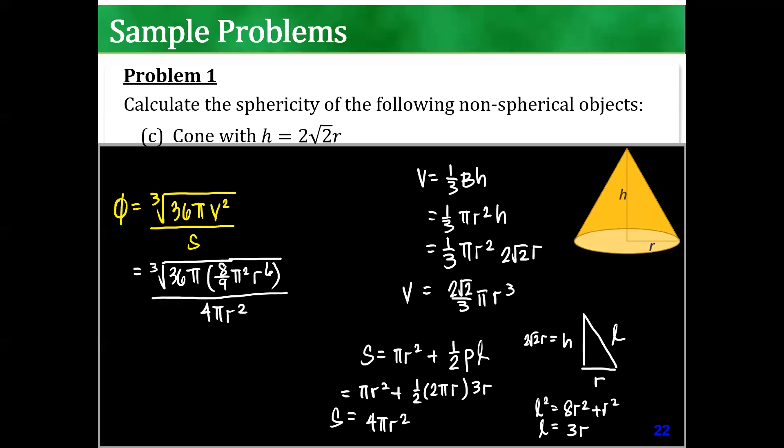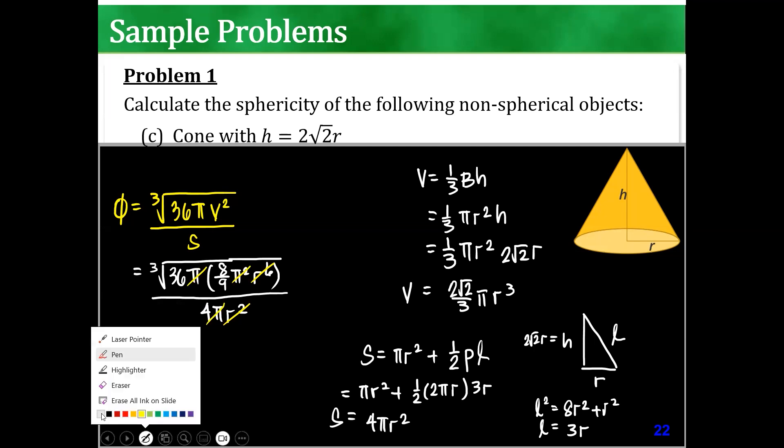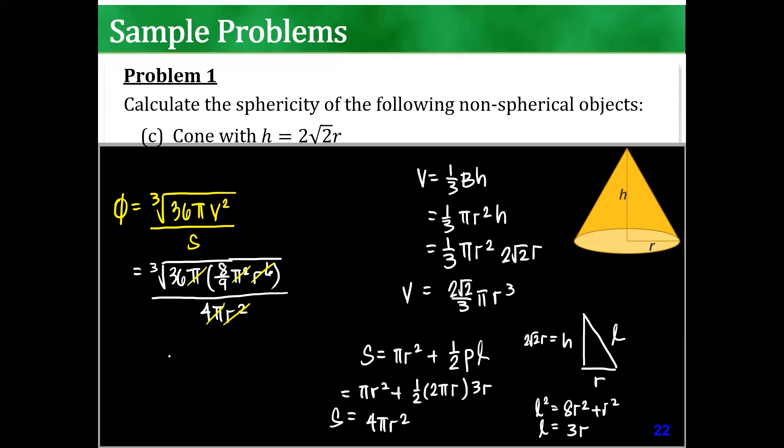So the r still cancels out, the pi still cancels out. The one on top that's left is, I can take out 2, cube root of, cube root of 4 over 4. Is it correct? 2 cube root of 4 over 4. What's the answer? 0.7 something. Yeah, that's correct, 7 9 3. So I forgot the surface area at the bottom.